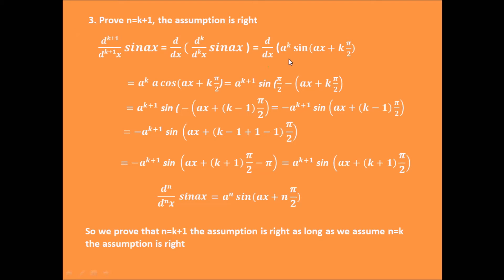After taking the derivative of sine ax, we have a to the power of k plus 1 times cosine of ax plus k pi divided by 2, which can be written as a to the power of k plus 1 times sine of pi divided by 2 minus (ax plus k pi divided by 2). Then, after using some trigonometric formulas, we can show the (k+1)th order derivative of sine ax equals a to the power of k plus 1 times sine of ax plus (k+1) pi divided by 2.